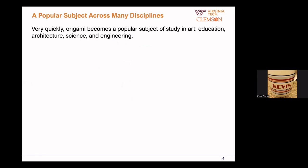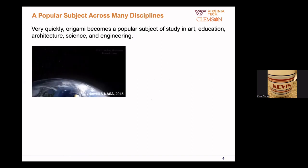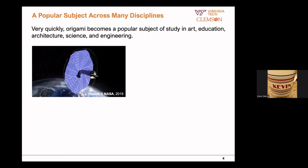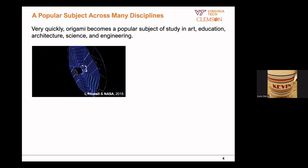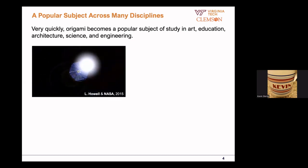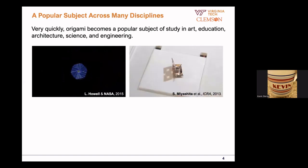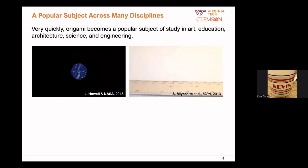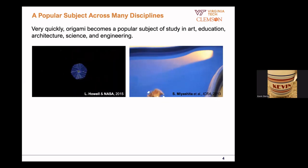Very quickly, origami became a popular subject of study in art, education, architecture, science, and engineering. Let me show you some examples of origami used in engineering. Because it's a space center, I have to show an origami solar panel. This is a software design done by a group at BYU and NASA. The idea is to use a folding pattern called a 'flasher' — you can fold that into a small cylindrical volume to fit into a rocket launcher, and then deploy it in space. There's also a self-folding robot that folds in response to heat and uses an external magnetic field for activation, so it can move around, carry payloads, go up a slope, or even swim in water, for drug delivery inside a human patient's body.